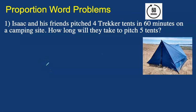Today, we're going to be working on solving proportion word problems. Let's go ahead and read number one. Isaac and his friends pitched four trekker tents in 60 minutes on a camping site. How long will they take to pitch five tents?